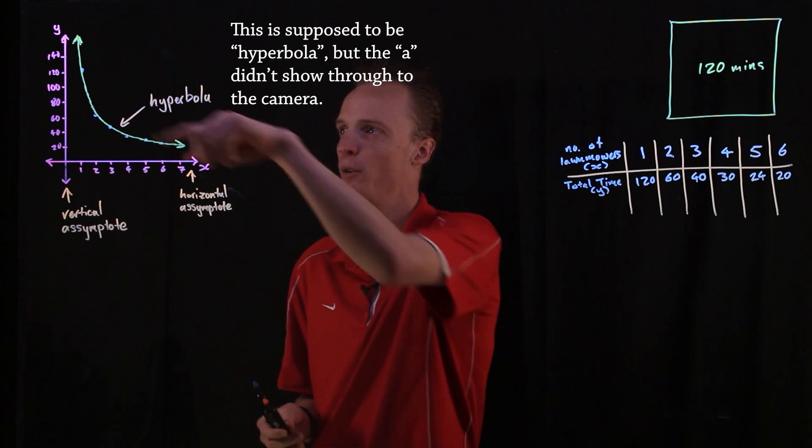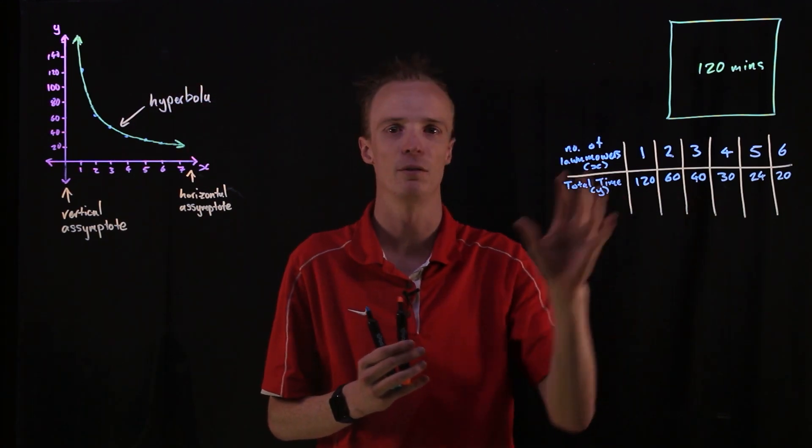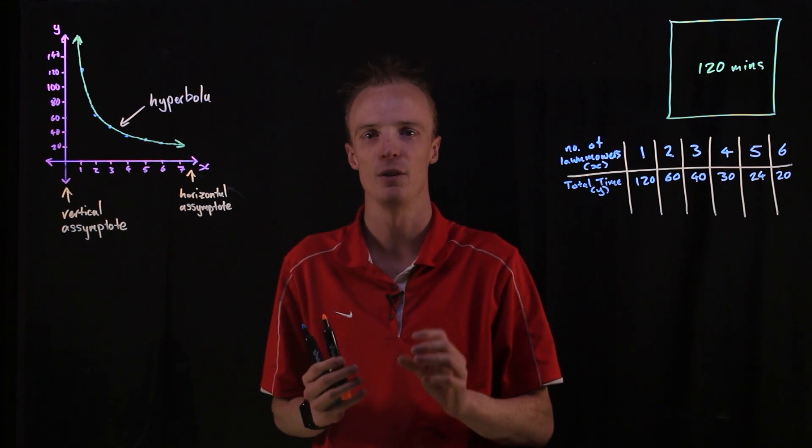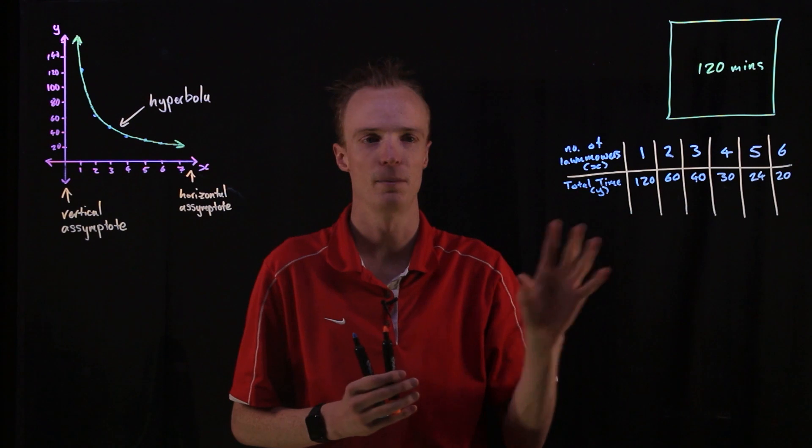So now we've had a look at what this sort of relationship looks like. Let's have a look at what makes this sort of relationship an inverse relationship. And to do that, I'm actually going to refer back to my table of values.